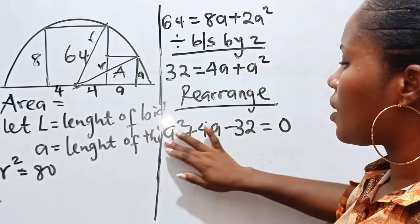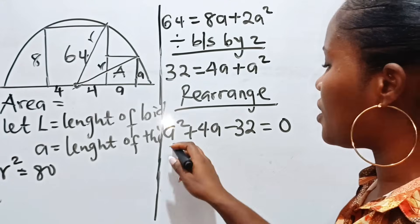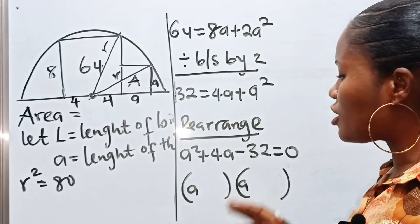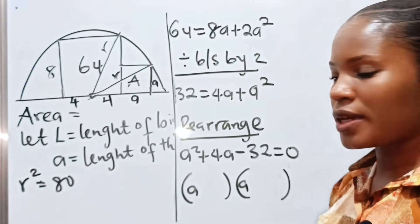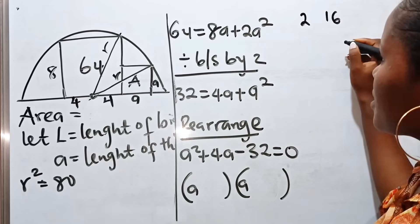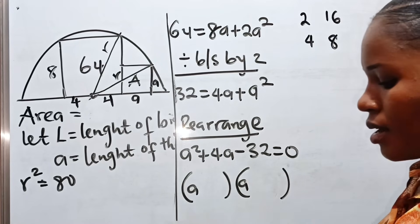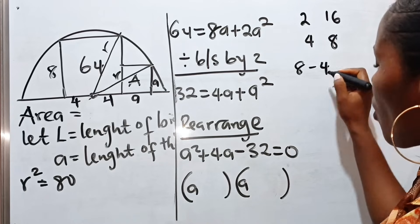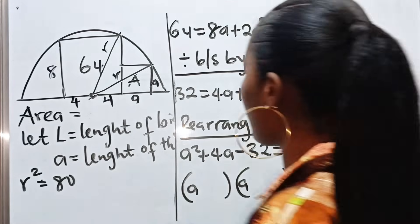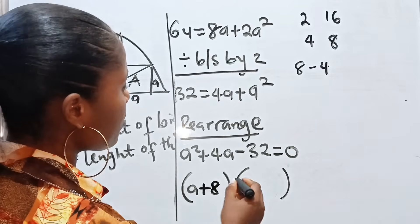Now let's factorize. A times A gives us A squared. We need two factors of minus 32 that add up to plus 4. Trying 8 and minus 4: 8 minus 4 gives 4, and 8 times minus 4 gives minus 32. So the factored form is (A plus 8)(A minus 4) equals 0. This implies A plus 8 equals 0 or A minus 4 equals 0.